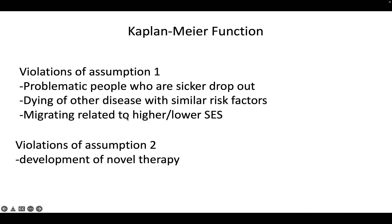Also, people migrating away from where the study is located — that might be a function of socioeconomic status, where people of some socioeconomic status are able to move elsewhere while others aren't. A violation of assumption two — that risk is the same over calendar time — could occur if a novel therapy came about and the risk becomes lower in a certain time period of follow-up, giving you different risk before and after that therapy came into implementation.